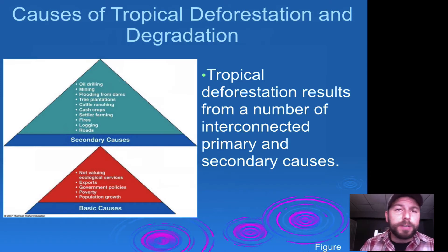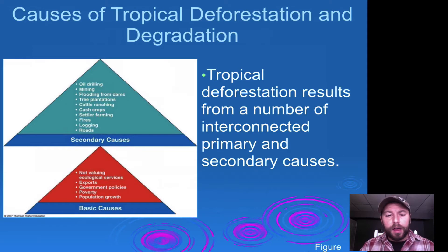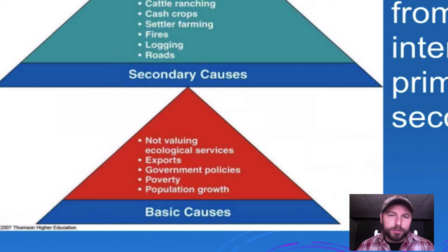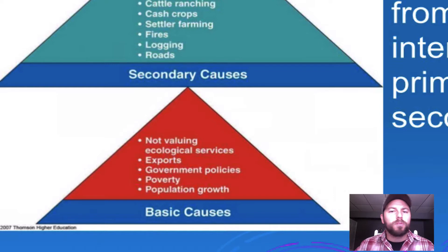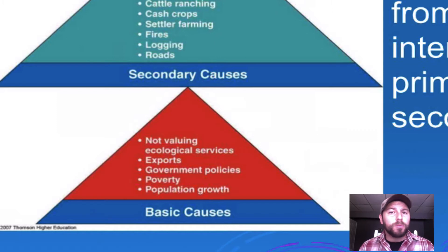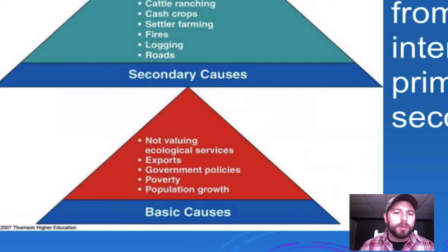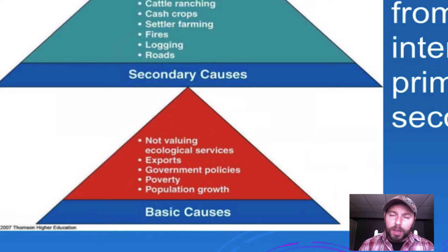Looking at the causes of tropical deforestation and degradation: basic causes include not valuing the ecological services forests provide, such as CO2 uptake and water filtration. Government policies may be non-existent or counterproductive, and poverty plays a major role — when people don't have money, they need to find ways to provide for their families, even if it means exploiting natural resources. Population growth is probably the biggest and worst cause.